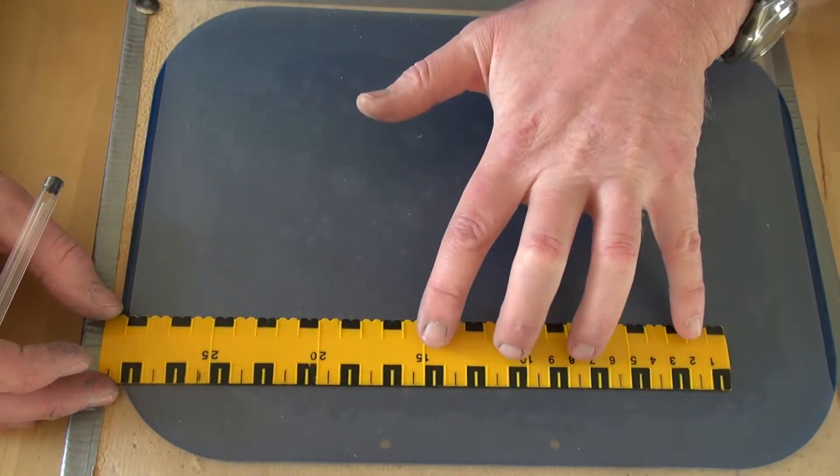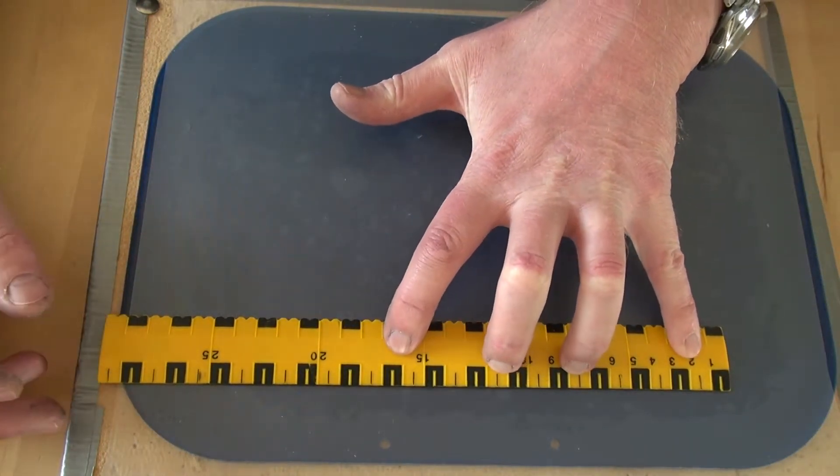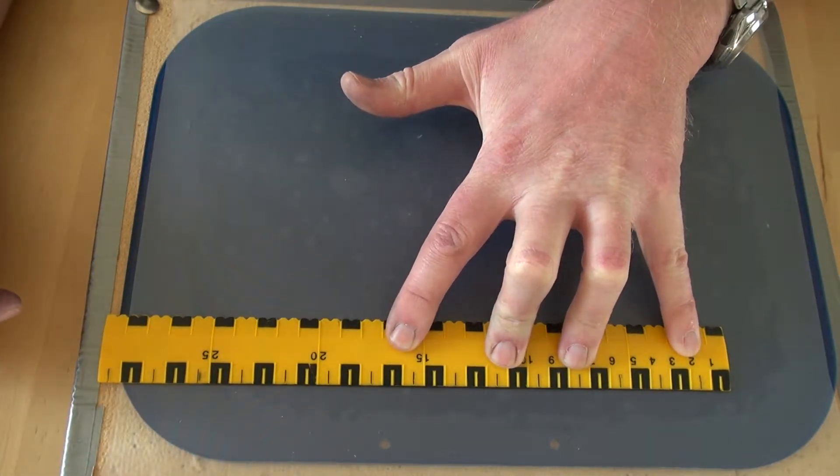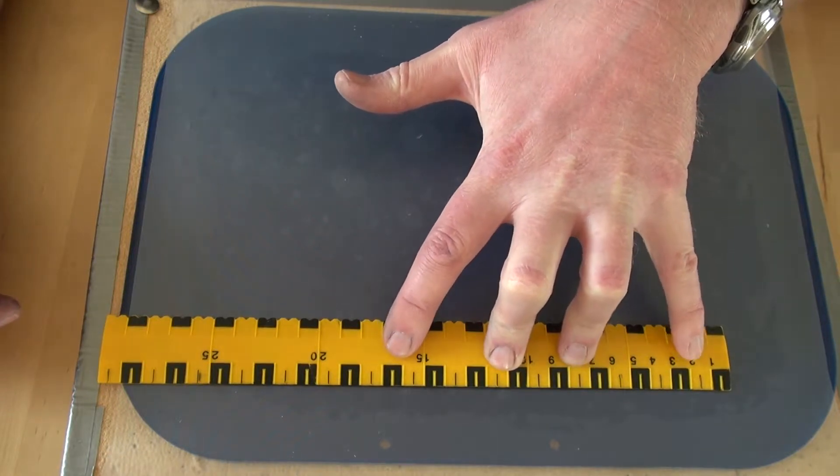So the first thing to do is spread your fingers across the ruler. I'll call it spider legs - the kids quite seem to like that. They know what I'm talking about.